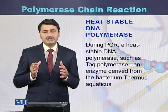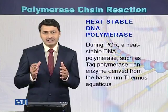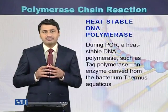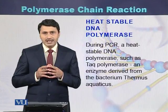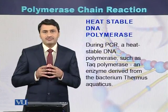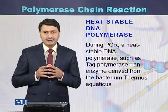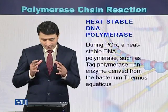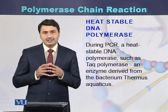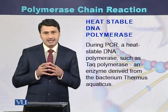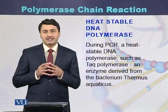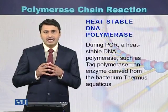During PCR, a heat-stable DNA polymerase is used. This DNA polymerase was initially identified and purified from a bacterium found in hot springs. The name of that bacterium is Thermus aquaticus. So the first time the DNA polymerase was purified from Thermus aquaticus and that DNA polymerase was used for the PCR.